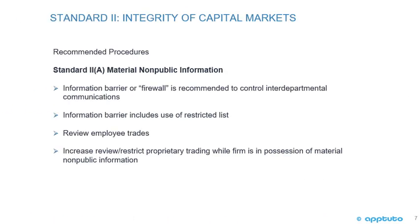Recommended procedures for Standard 2A - Material non-public information. An information barrier or firewall is recommended to control interdepartmental communications. The information barrier includes use of a restricted list, review of employee trades, and increased review or restriction of proprietary trading while the firm is in possession of material non-public information. And that's the last slide for Standard 2A.